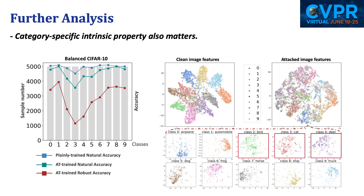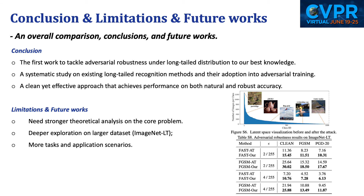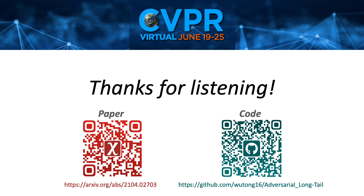In summary, we first propose a challenging and realistic new task that tackles adversarial robustness under long-tail distribution, along with a systematic study and a clean yet effective method. This is an interesting attempt towards real-world robustness, and leaves a lot more to explore in future works, such as stronger theoretical analysis, deeper exploration on larger datasets, and applications to more tasks. Our code is now available on GitHub, including all the methods involved in the empirical study, our own algorithm, and several other experiments. We hope it can be helpful for those interested in this area. Thanks very much for listening.